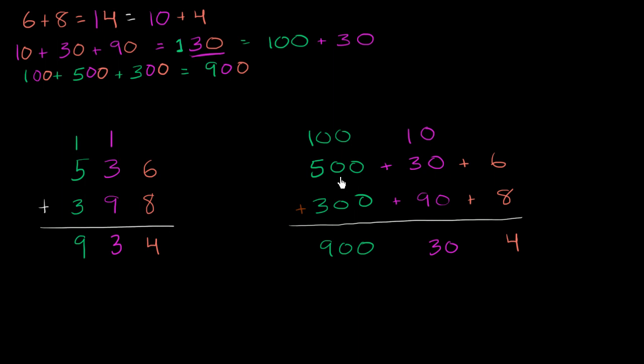We've figured out that 500 plus 30 plus 6 plus 300 plus 90 plus 8 is equal to 900 plus 30 plus 4, which is the same thing as 934.